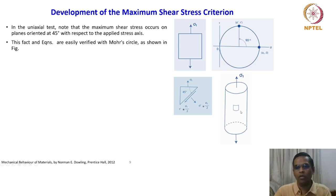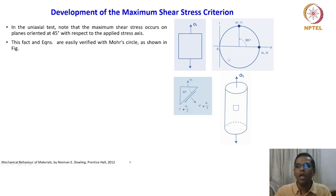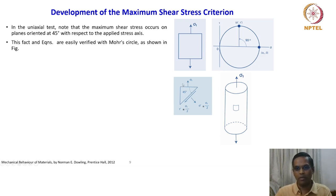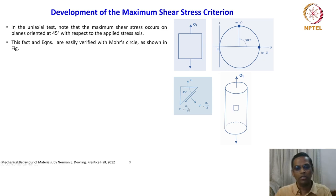We are now considering the uniaxial deformation — tensile deformation — whether it could be a cylindrical member or a square member. We are saying that the maximum shear stress occurs on the planes oriented at 45 degrees. So this is the square member, and according to this geometry, this is the plane oriented at 45 degrees. On this plane, the shear stress tau prime equals σ₁/2, which is nothing but τ₀ = σ₁/2.